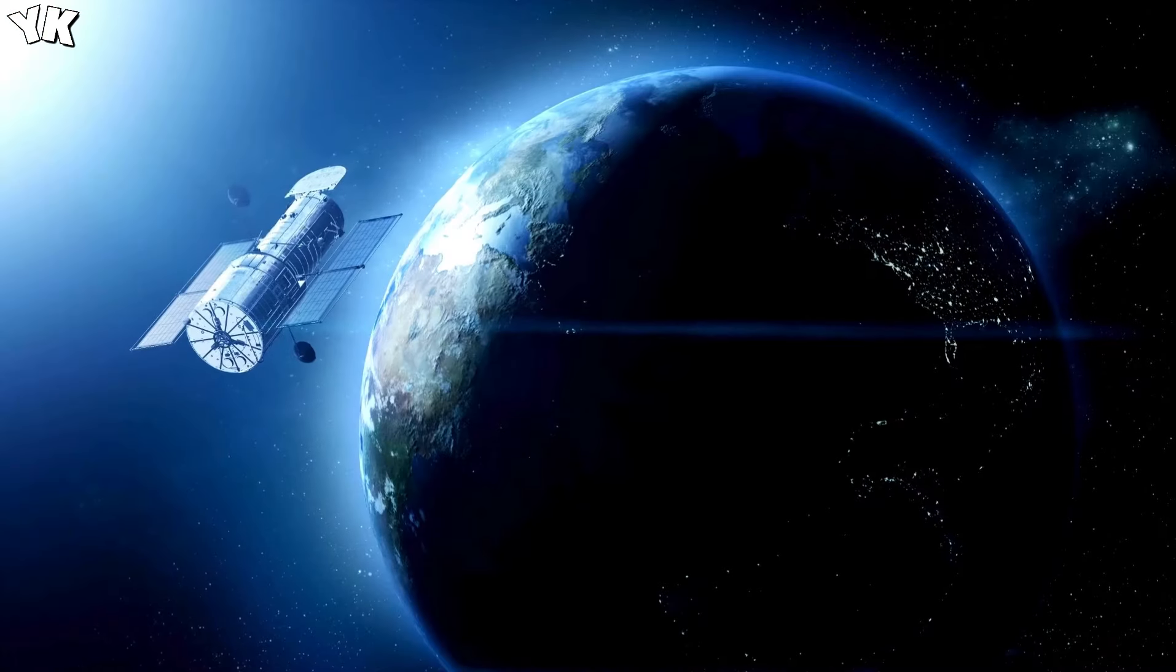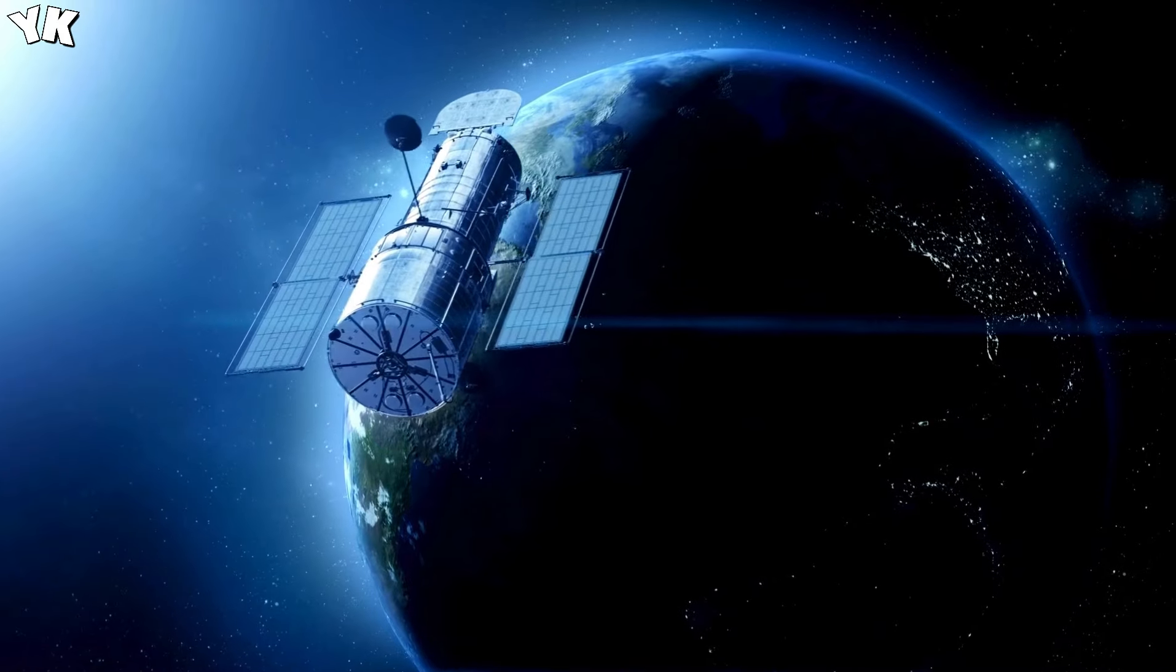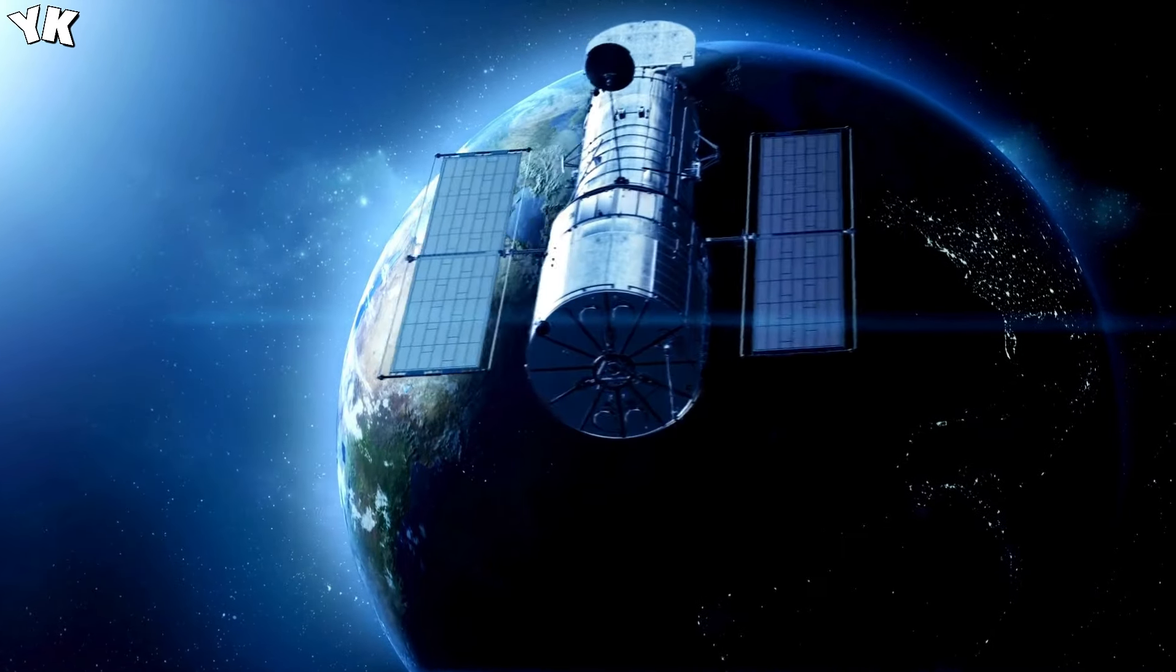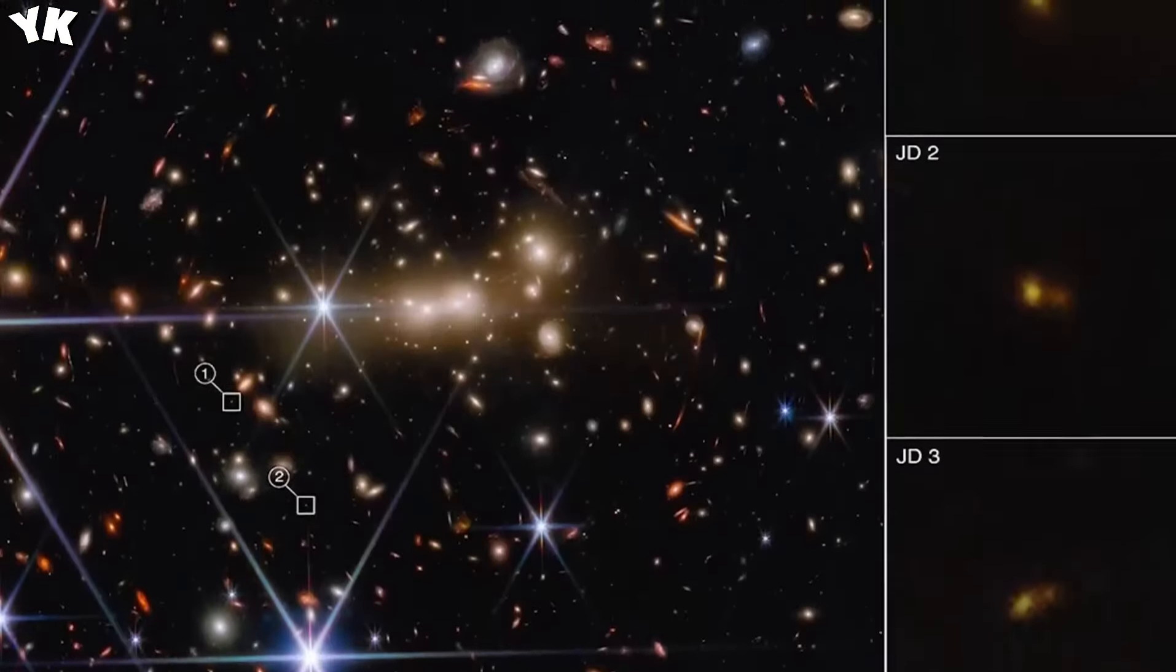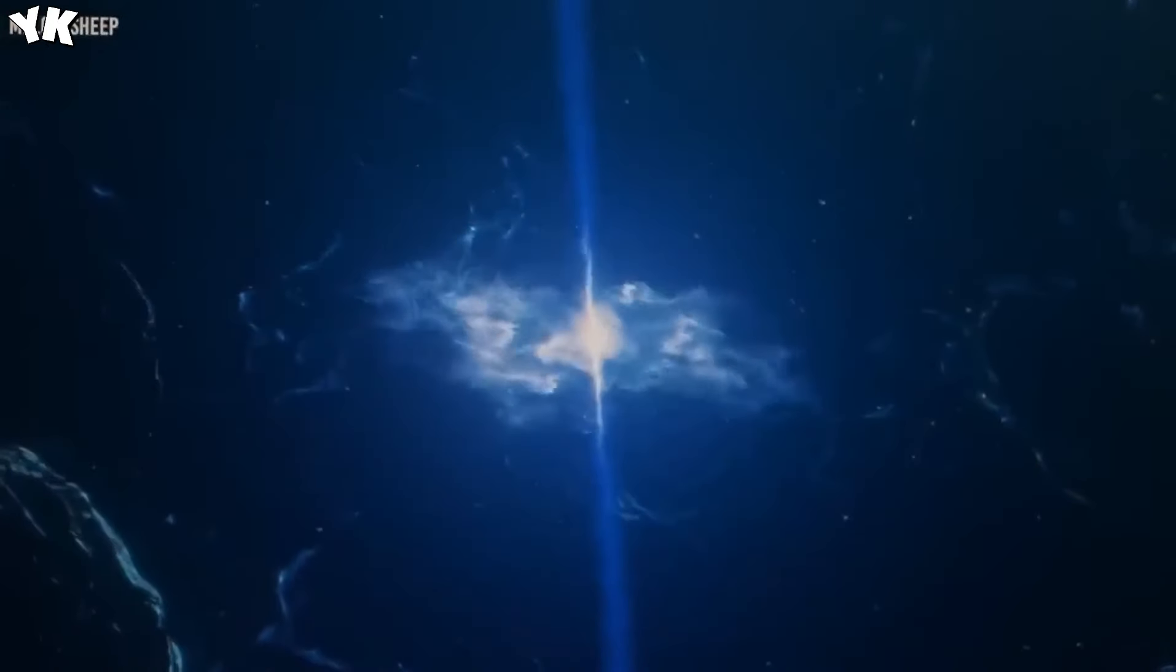Previously, the earliest galaxies we could see just looked like little smudges. Yet, those smudges represent millions or even billions of stars at the beginning of the universe. Now we can see that some of them are actually extended objects with visible structures.